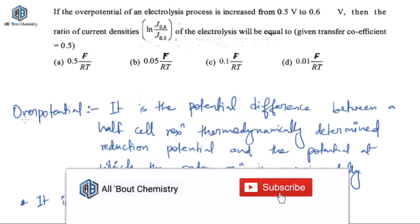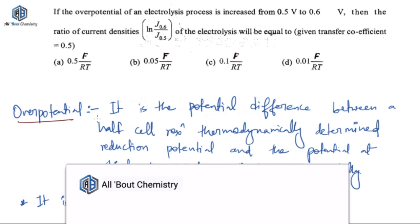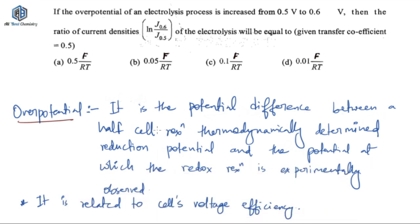So if you go with the definition of overpotential, it is the potential difference between a half cell reaction's thermodynamically determined reduction potential. So if you have a redox reaction you will be having two half cells oxidation half cell and reduction half cell. So you can determine the reduction potential using thermodynamics. So it is the difference between that particular thermodynamically determined reduction potential and the potential at which the redox reaction is experimentally observed.